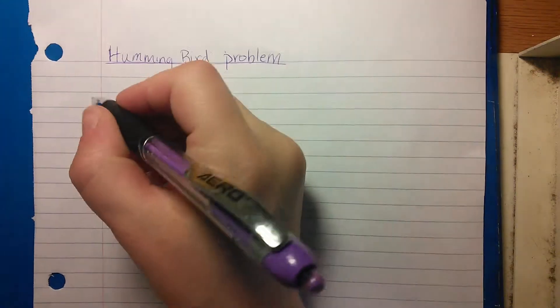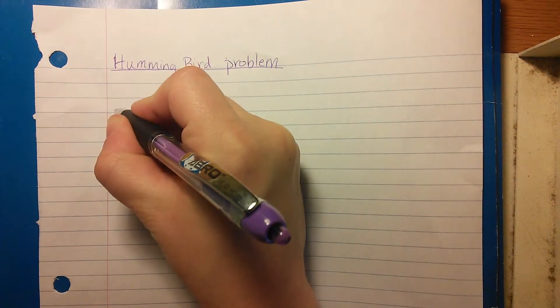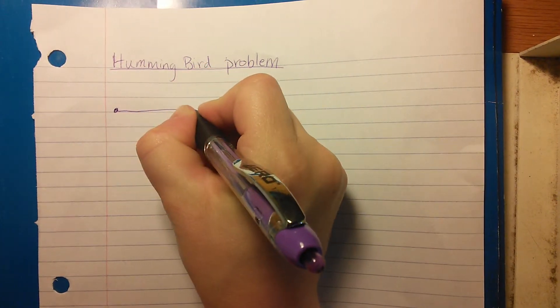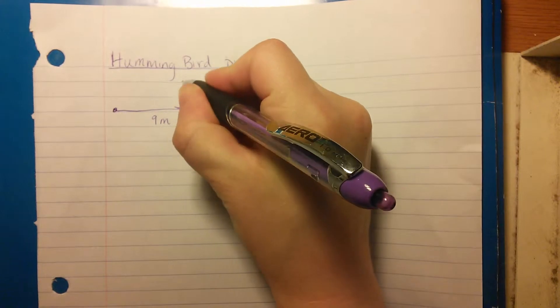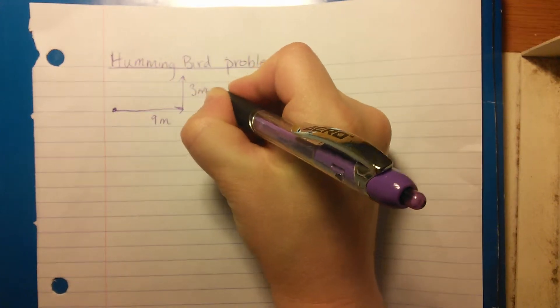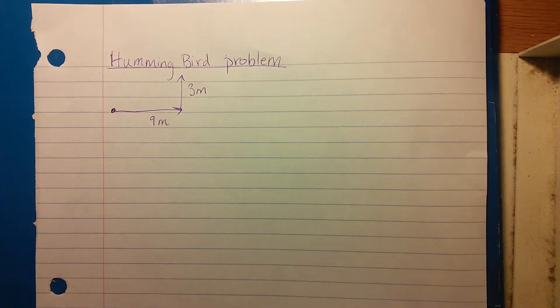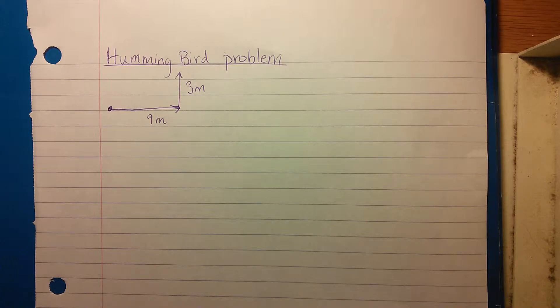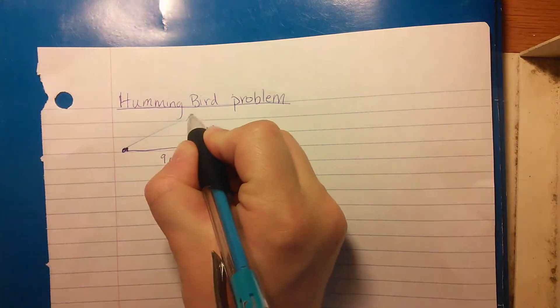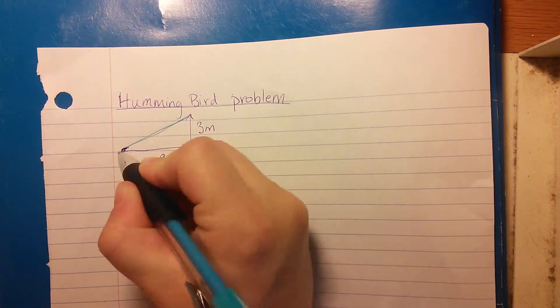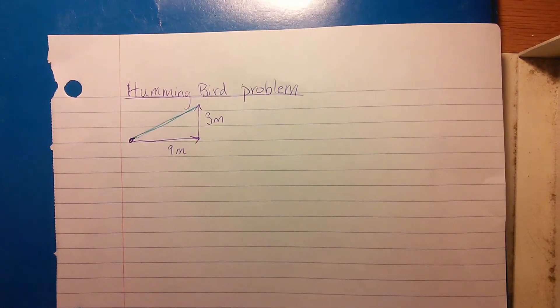Let's work on that hummingbird problem we just saw in the PowerPoint. Remember, the hummingbird starts here, goes 9 meters horizontally, and then flies for 3 meters up. If you have different colored pens or pencils, you may want to color code it so it's easier to see. We want to find that blue line there.